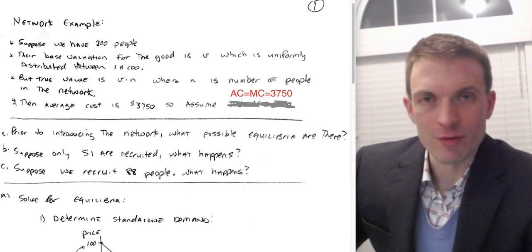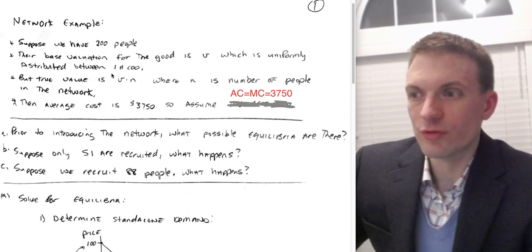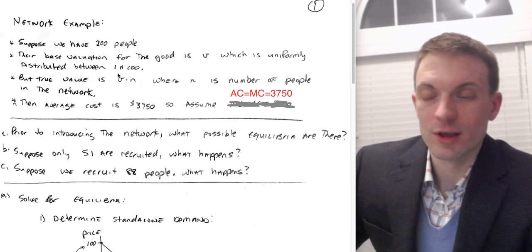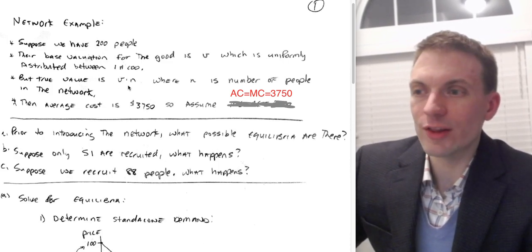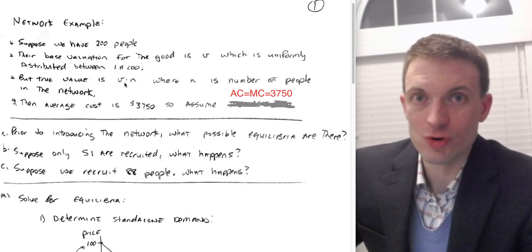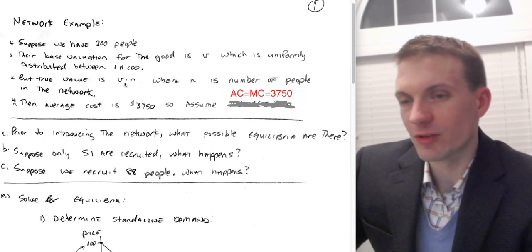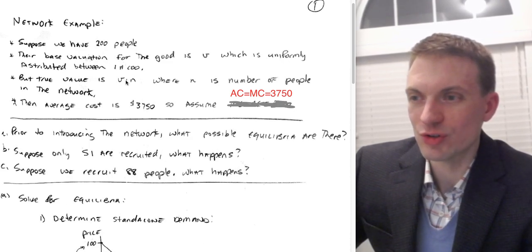We'll assume everybody has a base valuation for the good — call that v — and assume it is uniformly distributed between 1 and 100. So the low-value person has a valuation of 1 and the high-value person has a valuation of 100. The true value is going to be the individual's valuation multiplied by the network size. If you're the first person to join, you multiply your valuation by 1, so for the high-value person (v = 100), v times n equals 100.